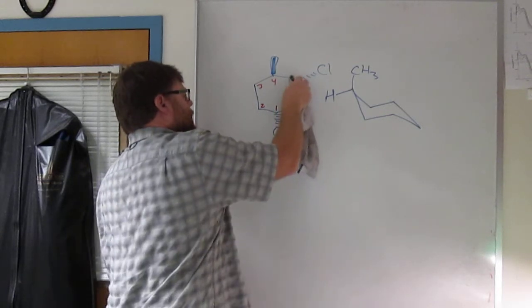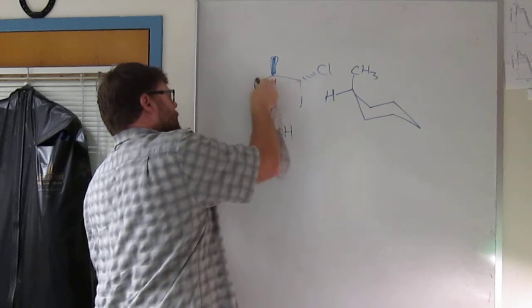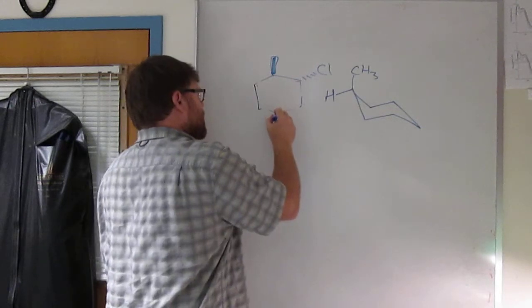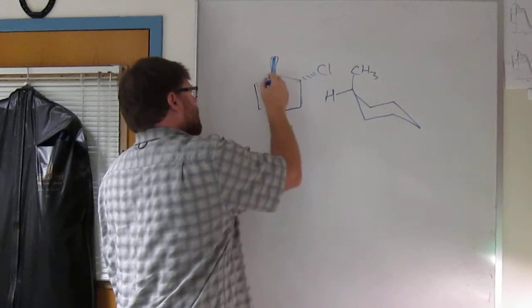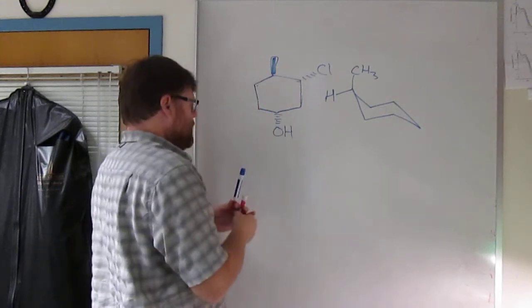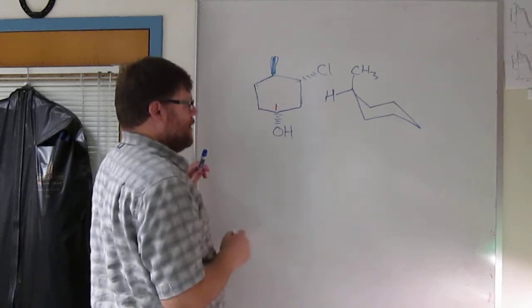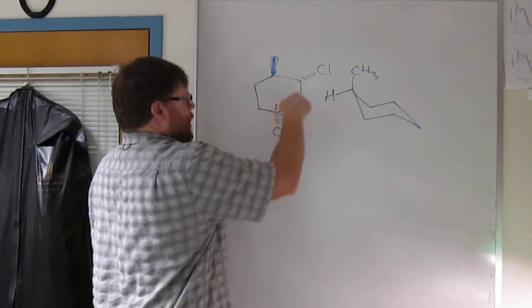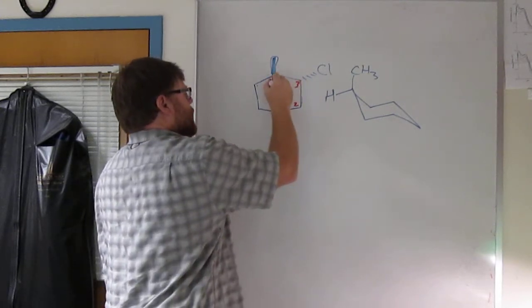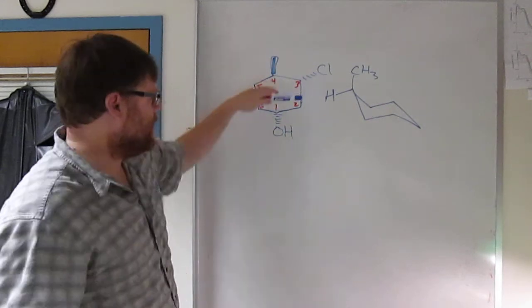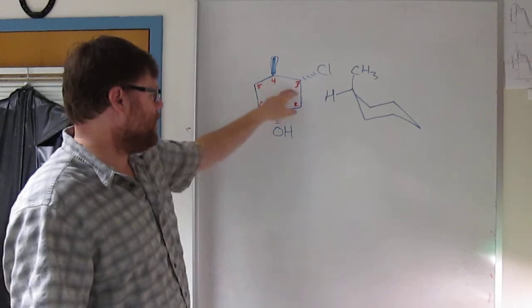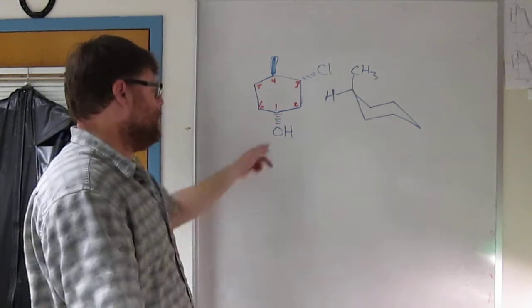If you're numbering this for nomenclature, it's a cyclohexanol, so the carbon with the OH is 1. You want to go this way so that the chlorine is 3 rather than 5. 2, 3, 4, 5, 6. I had initially gone this way, and that would have given me 1, 4, 5 instead of 1, 3, 4. 1, 3, 4 is lower than 1, 4, 5, so this is the way we go.